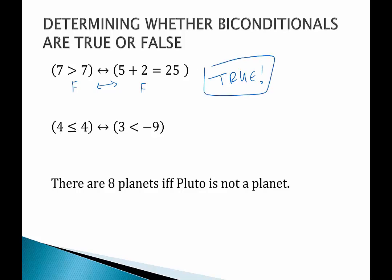How about this one? We have 4 is less than or equal to 4. That's true. 3 is less than negative 9. That is false. So true if and only if false. Nope. They don't have the same truth value. This one is false.